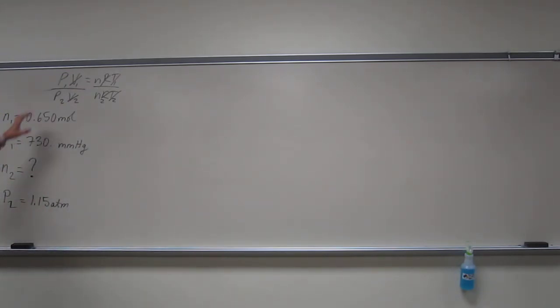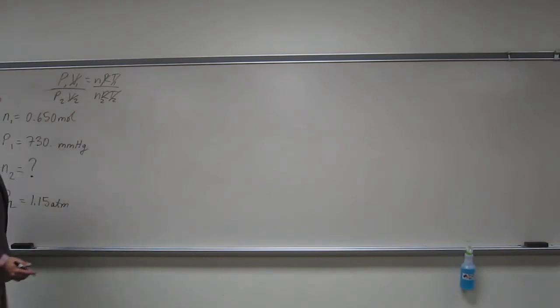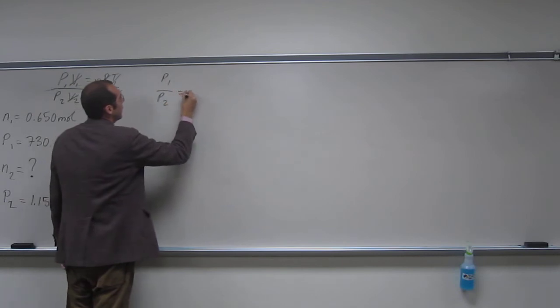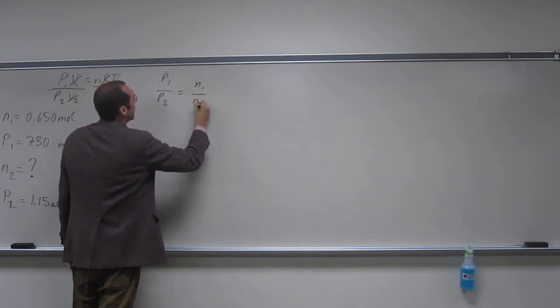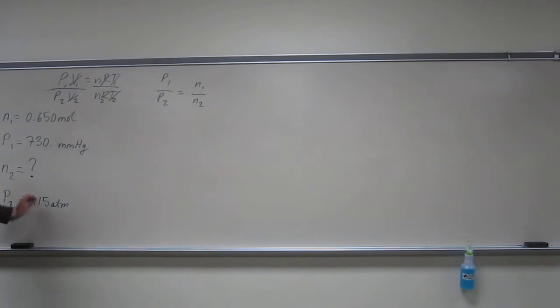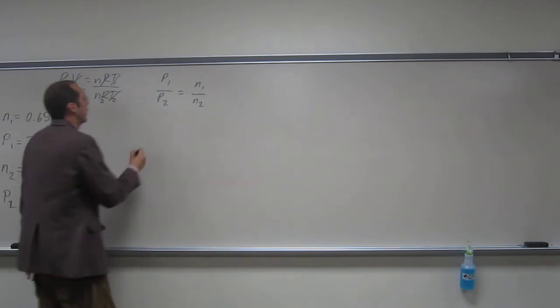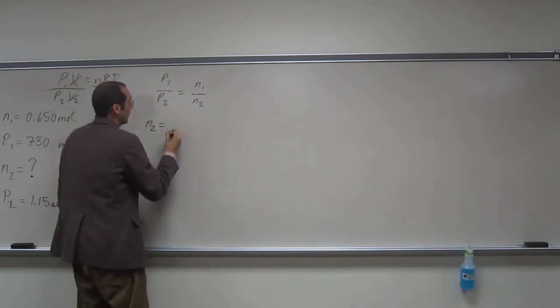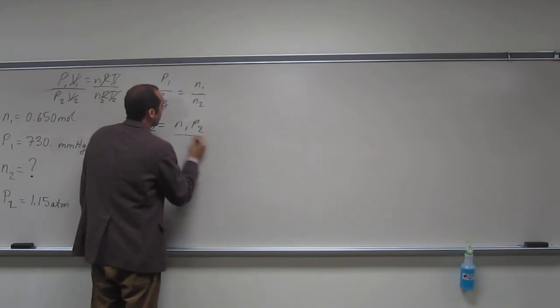So, the pressure has changed and the number of moles have changed, so let's rewrite our equation. P1 over P2 equals n1 over n2. And currently we're looking for n2, although that's not going to be the final answer. So let's rearrange our equation. n2 equals n1 P2 over P1.